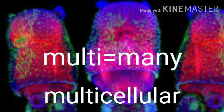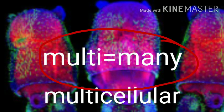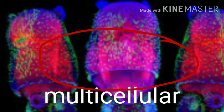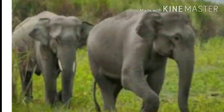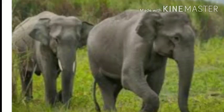Multi means many or more. Organisms having more than one cell in their body are called multicellular organisms. All the evolved and developed organisms are multicellular, like human beings.